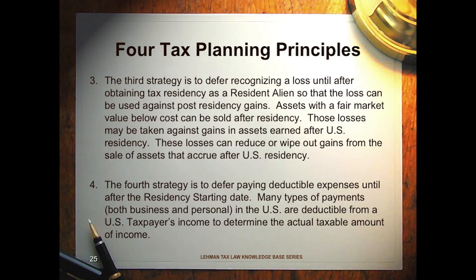We also want to handle losses a certain way. Losses are valuable as tax deductions once you are a U.S. taxpayer. So if that man had bought three million dollars worth of Ecuadorian art and then come here and sold it for fifty thousand dollars, we wouldn't want him to have sold his art before he got here — we would want him to come here, sell his art, and have a loss of two million nine hundred and fifty thousand dollars that he might be able to offset against gains he might make after becoming a U.S. taxpayer.